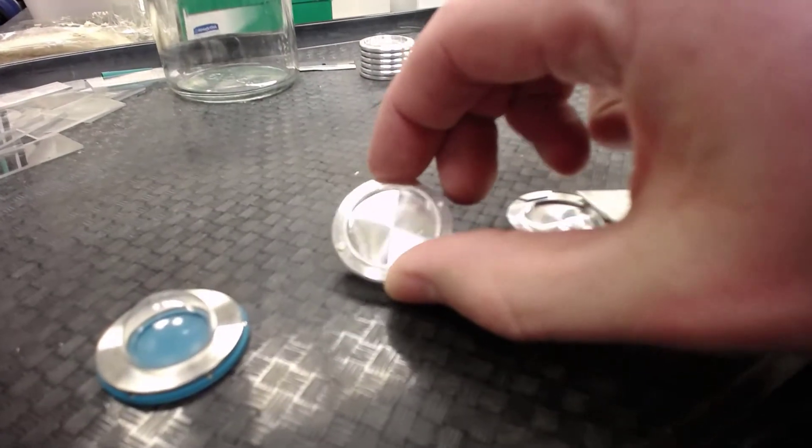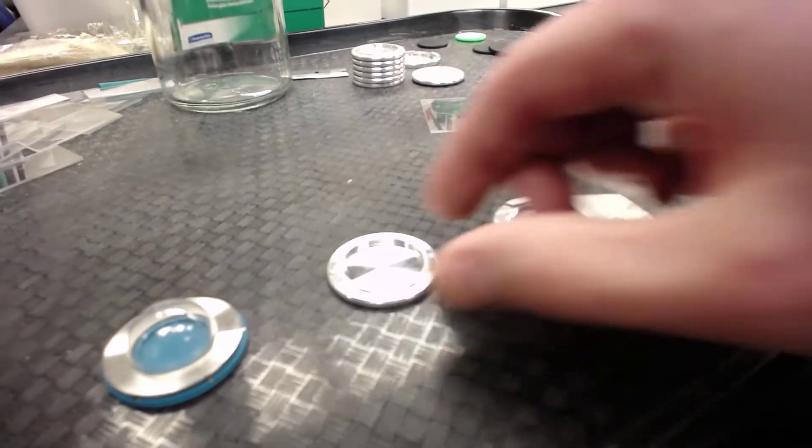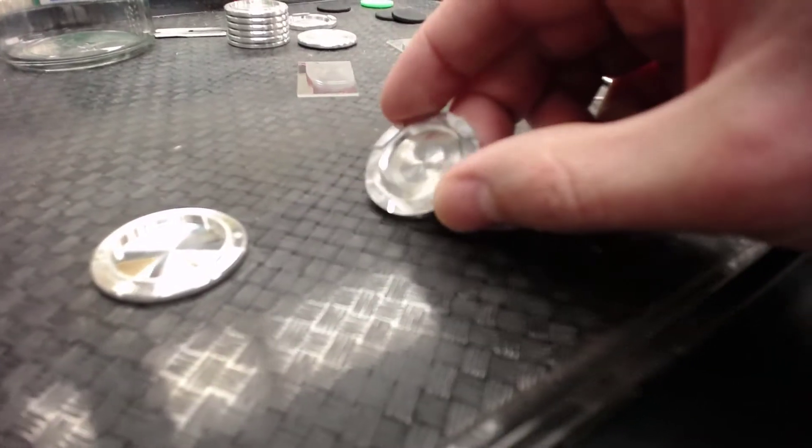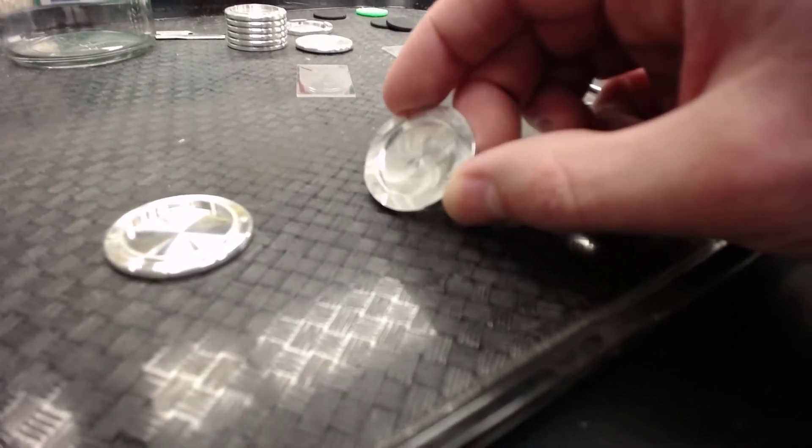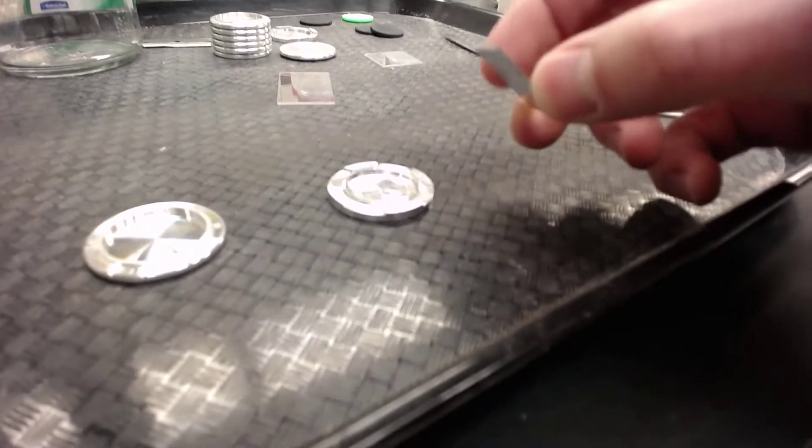This one you can see has a well in it where the powder gets packed into. And then the one on the right is actually our custom made holder for holding one inch by one inch slides or squares of our metal in this case.